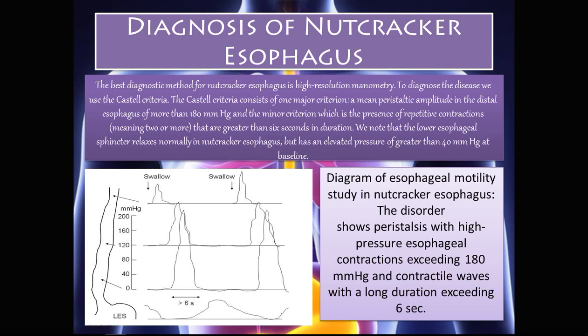The best diagnostic method for nutcracker esophagus is high-resolution manometry. To diagnose the disease we use the Castell criteria, which consists of one major criterion — a mean peristaltic amplitude in the distal esophagus of more than 180 mmHg — and a minor criterion of repetitive contractions, two or more, greater than six seconds in duration. The lower esophageal sphincter relaxes normally but has an elevated baseline pressure of greater than 40 mmHg.